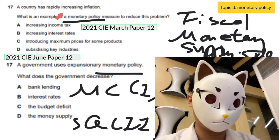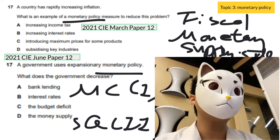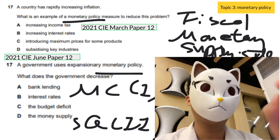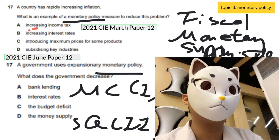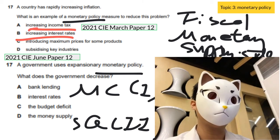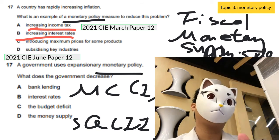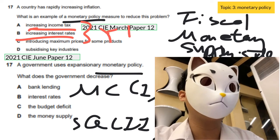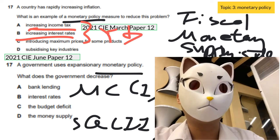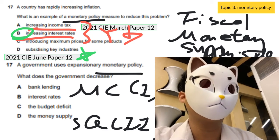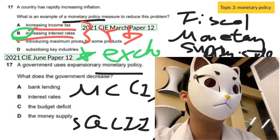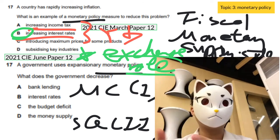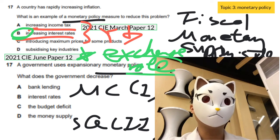Question 17 asks what kind of monetary policy would reduce inflation. Students often debate between options A and B — both will make aggregate demand drop. However, you must also consider the effect on the exchange rate, so the answer goes to B. We will discuss the effect of the exchange rate in more detail later in this video.